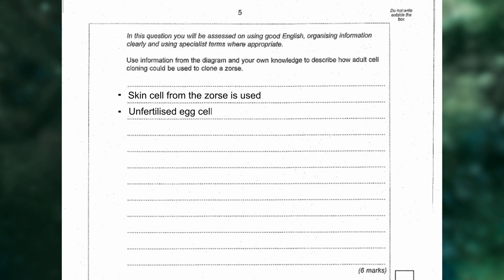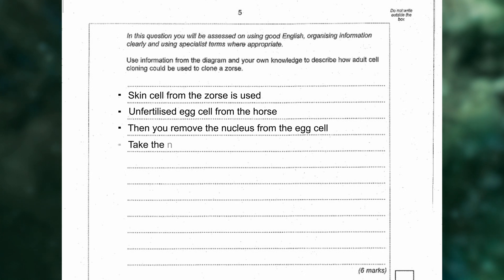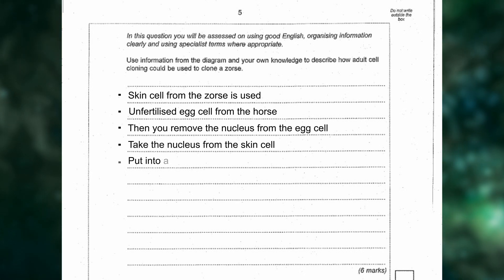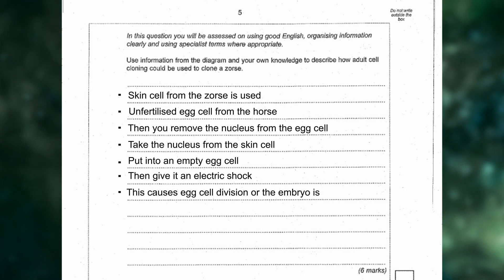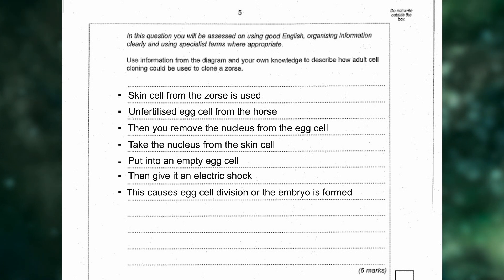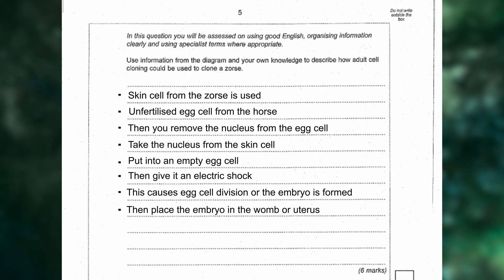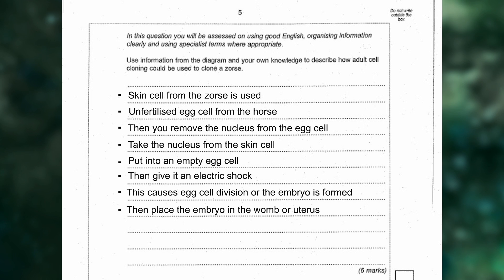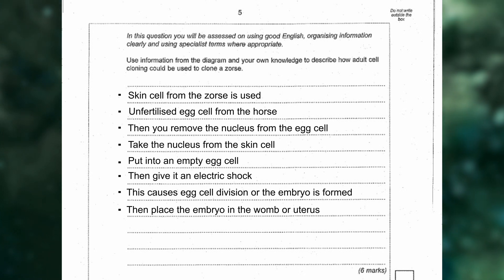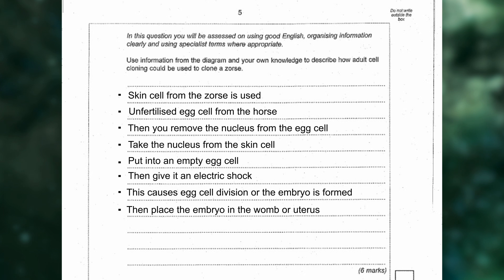The mark scheme steps are: first, a skin cell from the source is used; second, an unfertilized egg cell from the horse is obtained; then you remove the nucleus from the egg cell, take the nucleus from the skin cell, and put it into the empty egg cell; then give it an electric shock, which causes egg cell division and the embryo is formed; then place the embryo in the womb or uterus. The key things students drop marks on here is missing out key details or not being sufficiently scientific in their explanation.